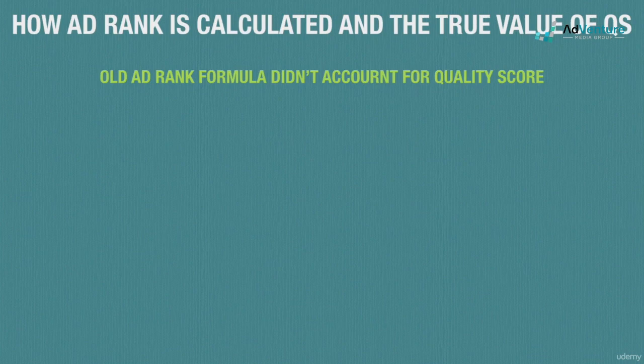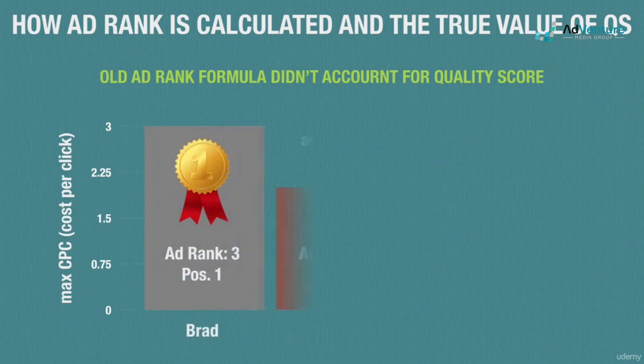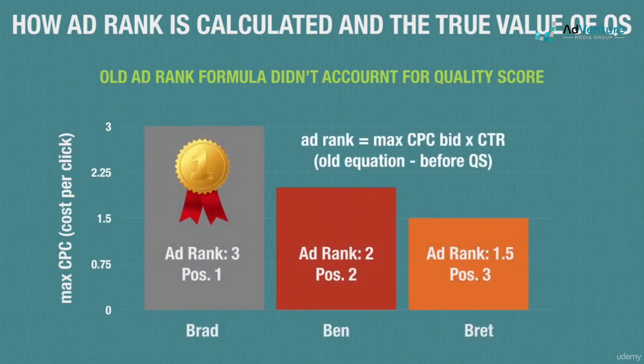It all begins with understanding how ad rank is calculated in the post quality score era. Like we saw in our example with Brad, Ben, and Brett, the old formula used to calculate ad rank didn't account for quality score — essentially the highest bidder won the top slot. The new formula changes things up dramatically, so let's see what it means for advertisers and their bidding wars.